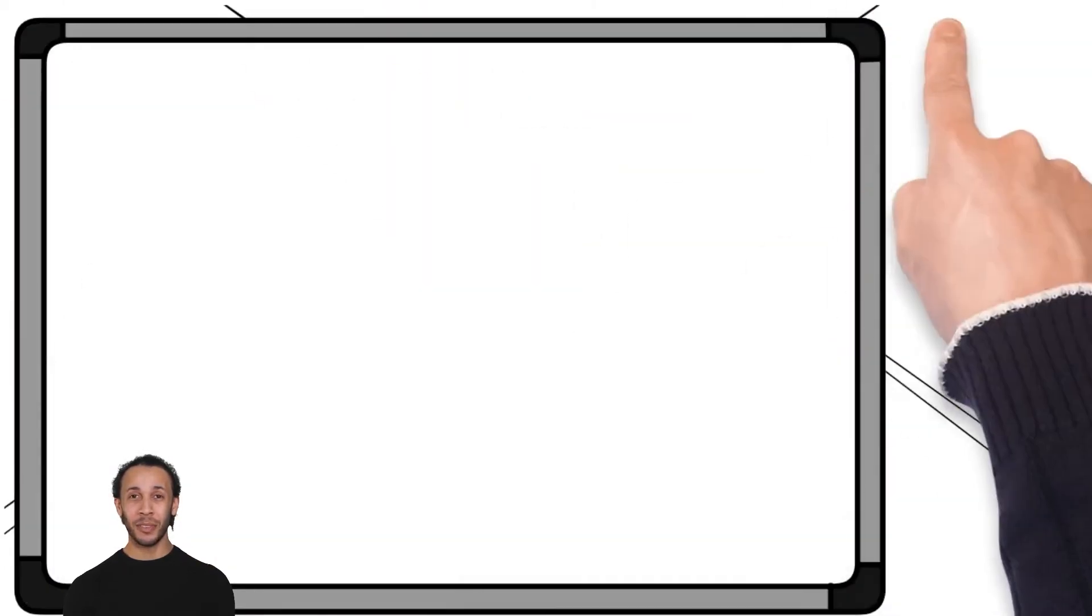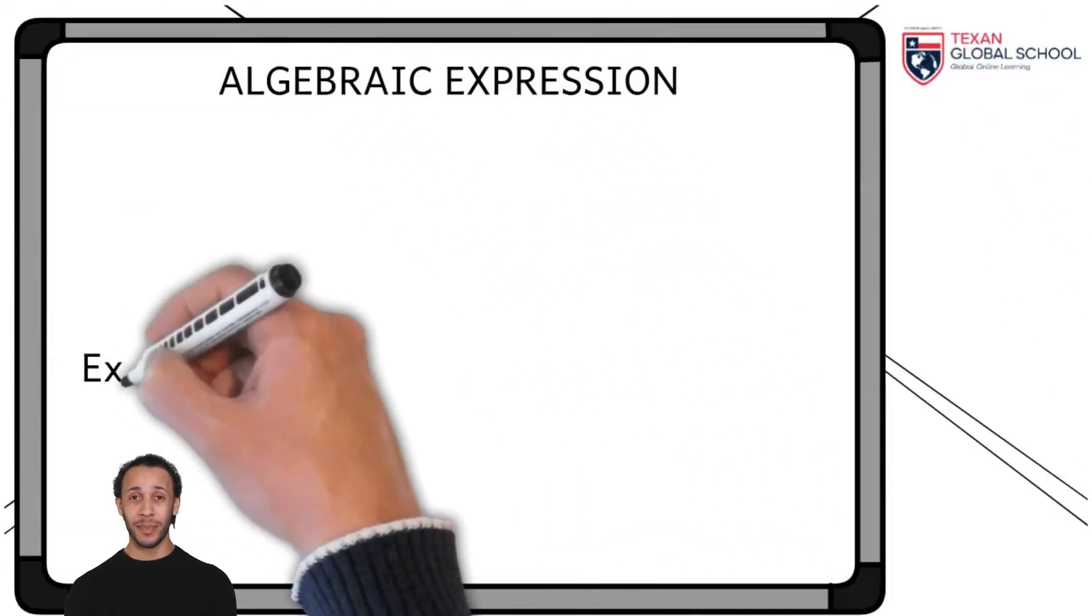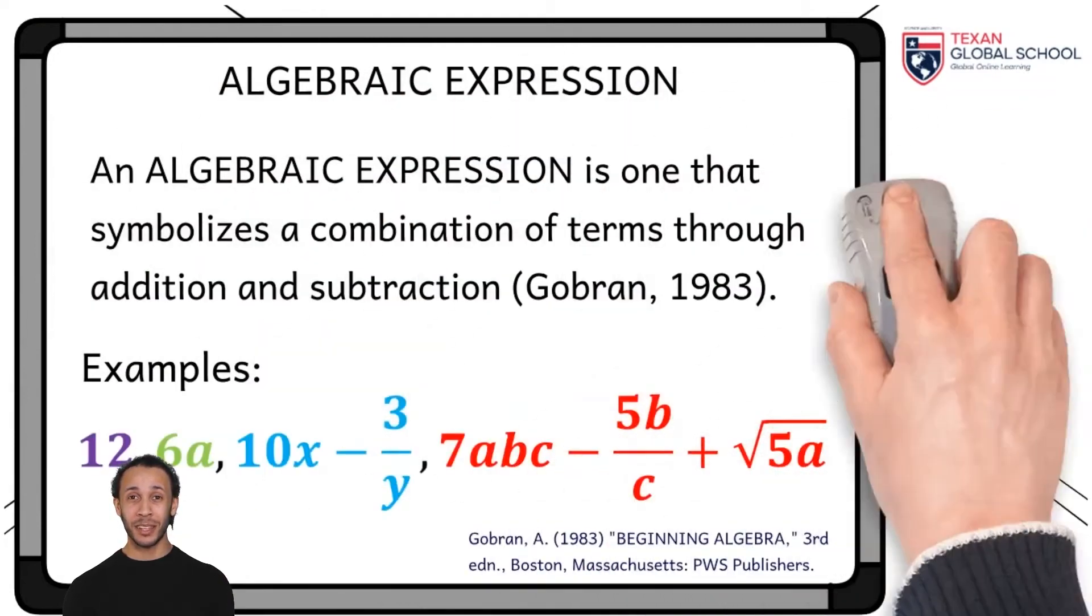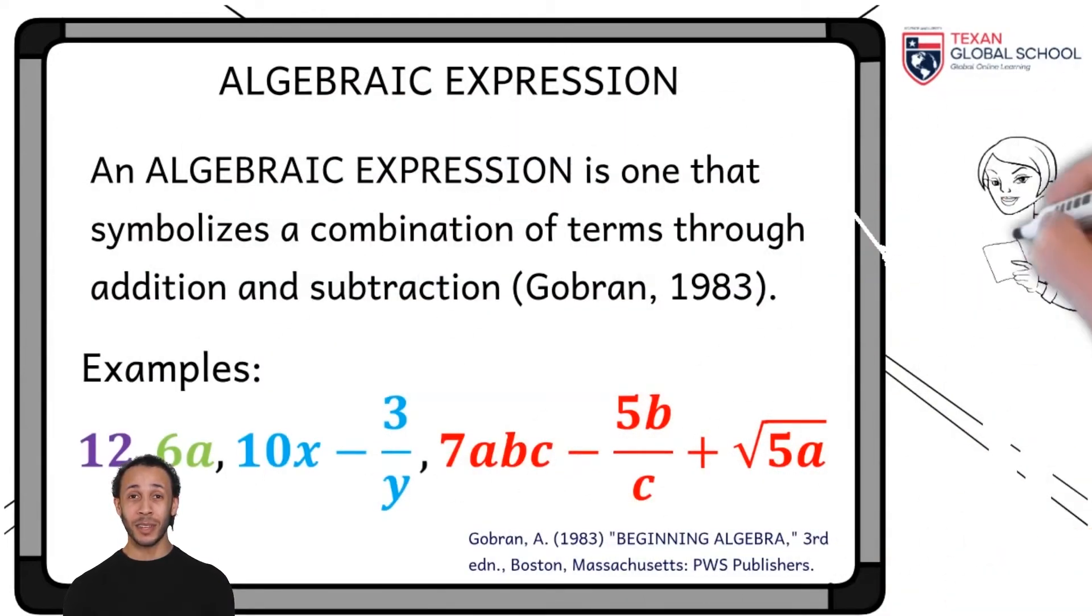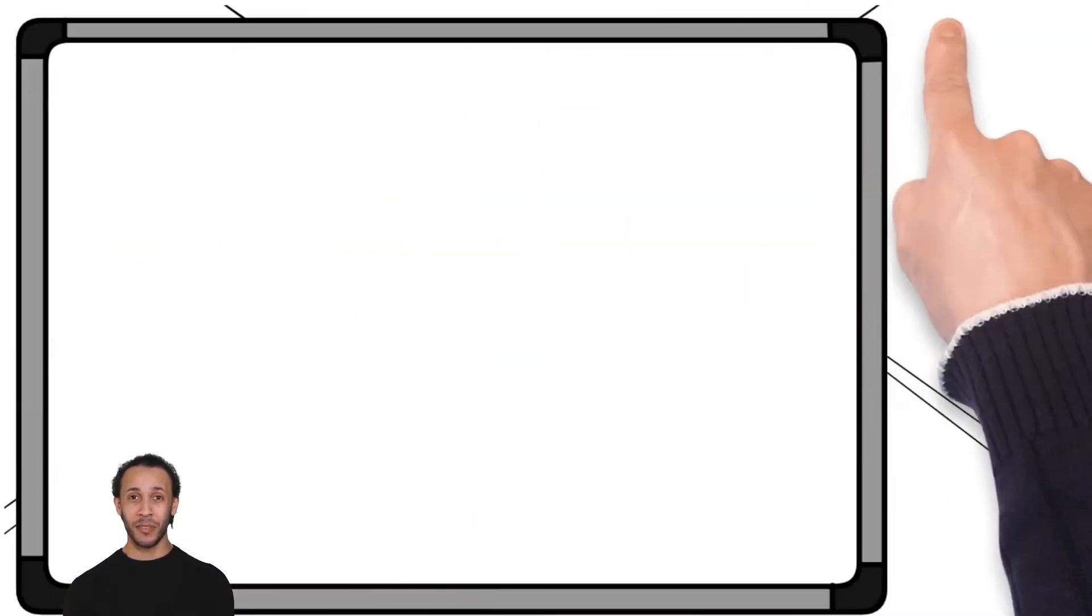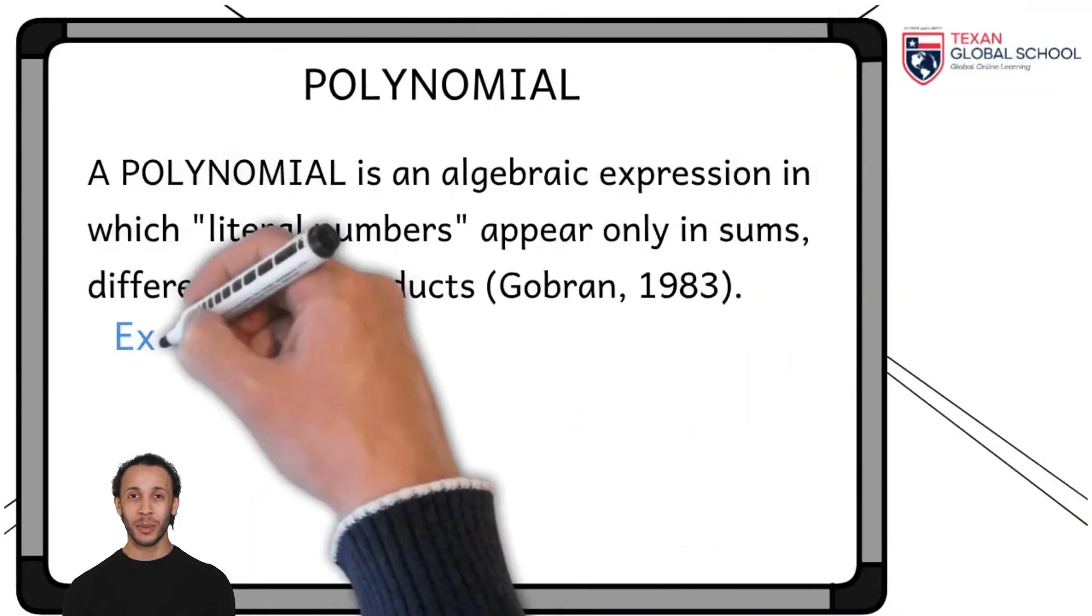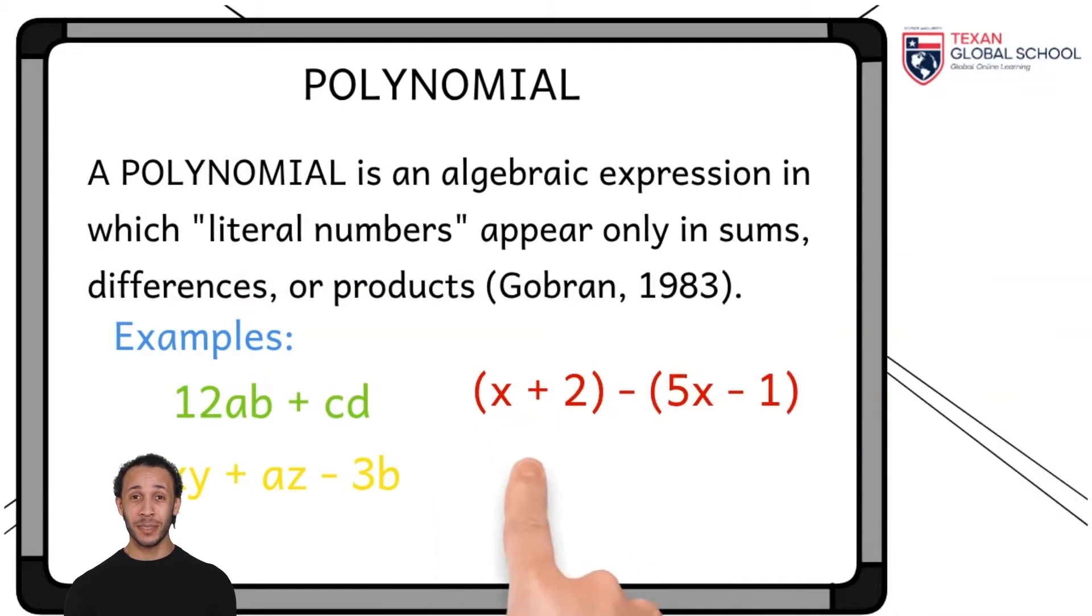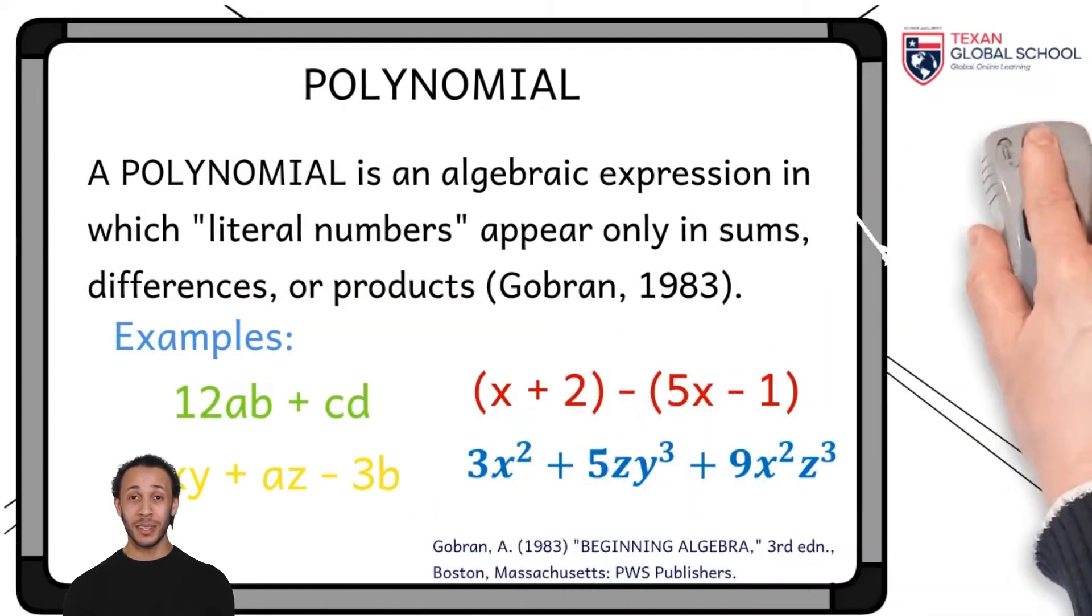We will analyze the concept of algebraic expression. Gobrin establishes that an algebraic expression symbolizes a combination of terms through addition and subtraction. According to this definition established by Gobrin, we define a polynomial as an algebraic expression in which the literal numbers appear only in sums, differences, or products. The listed examples meet the stated definition.